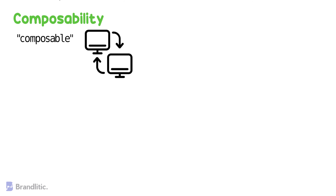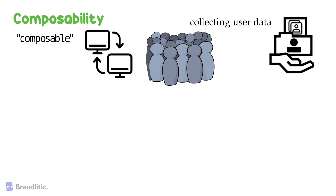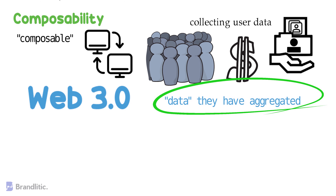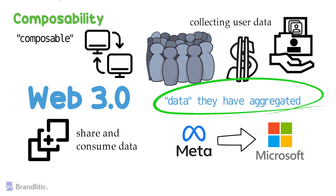Currently, every single software company is focused on collecting user data, which is their single biggest asset and differentiates them from one another — not the product, but the data they hold. Companies competing with similar UI, UX, and slightly different business logic are valuable independently because of the data they have aggregated. But this won't be the case anymore, as Web 3.0 will disrupt this. You'll be able to share and consume data across different applications — think about a metaverse where you can buy things from Meta and use them in the Microsoft ecosystem.